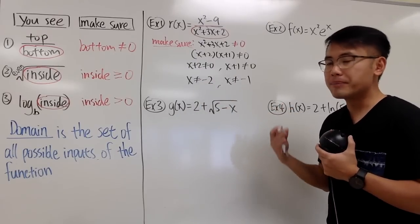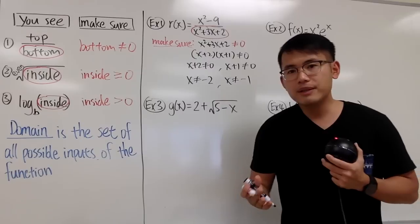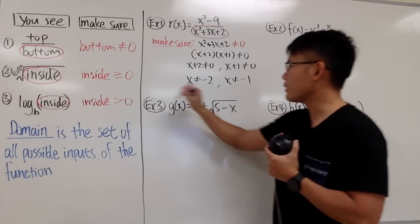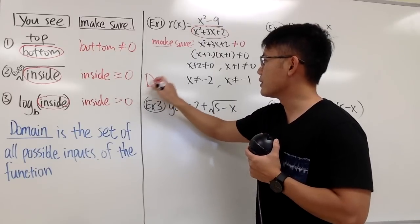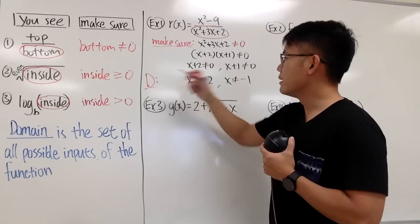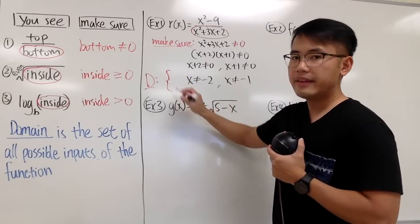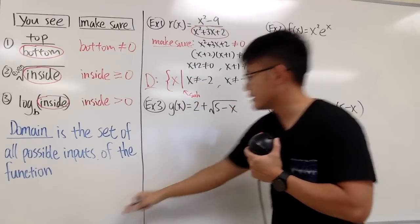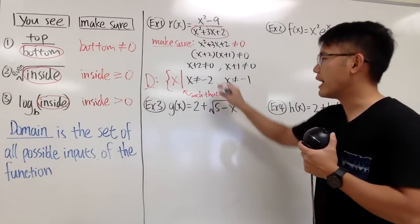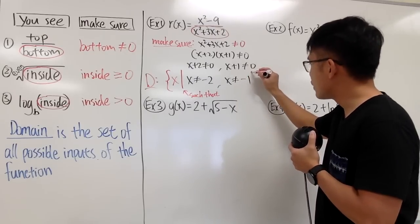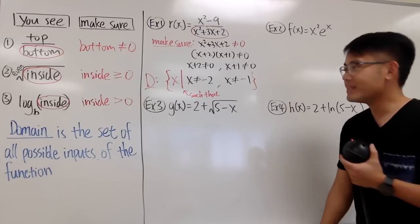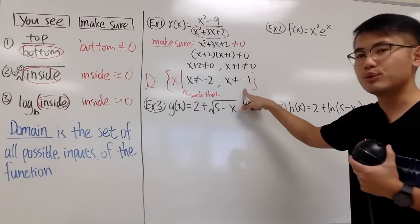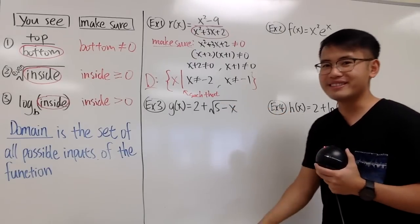Finally, to present your answer, I'm going to use set-builder notation. The domain — I'll put D for domain — using set-builder notation: I open the set, put down x, then a vertical bar which means 'such that,' and then the conditions, then close the set. The domain is all x values except x ≠ −2 and x ≠ −1. This is how you present the true answer. And of course, you don't have to do anything with the numerator, because there's no worry on the top at all.